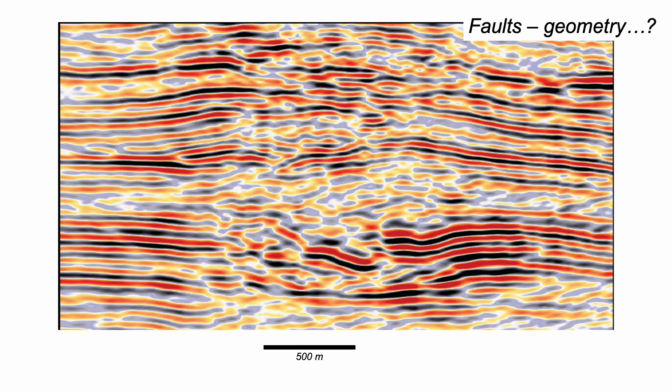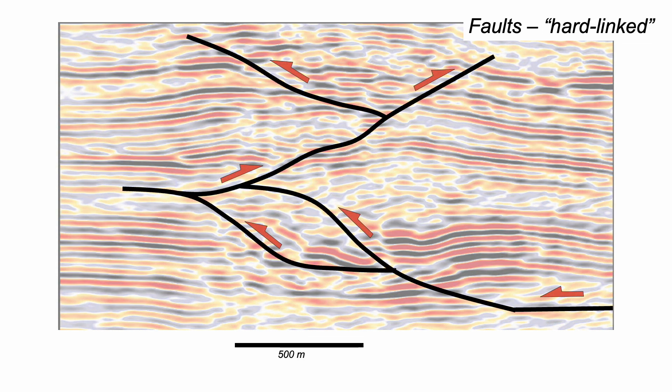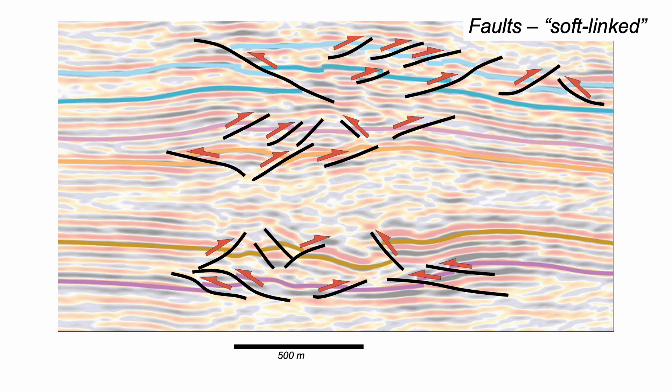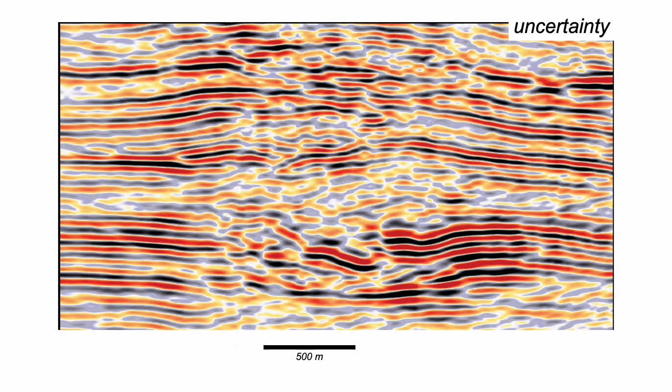And people view faults in different ways. Do they form linked networks like this? Or are they dispersed arrays like this? It matters because these faults can impact on forecasting how the Earth behaves, what its structure is, and how it may impact on engineering projects in that subsurface world.